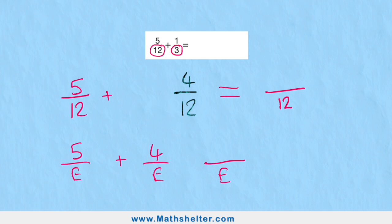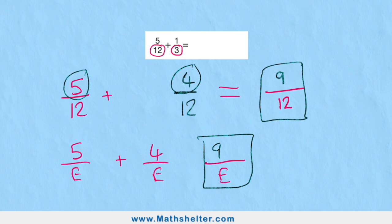So five-twelfths add four-twelfths equals nine-twelfths. Five elephants plus four elephants equals nine elephants. I think that's the best way to remember it. If we're adding in twelfths, we're always going to get an answer that's also in twelfths.